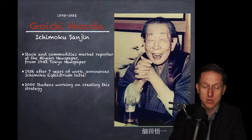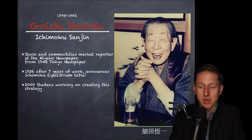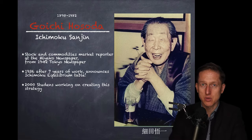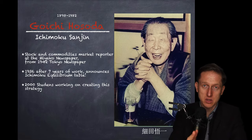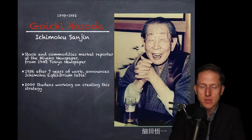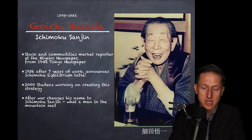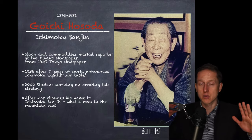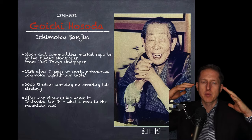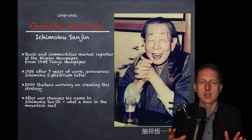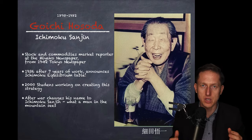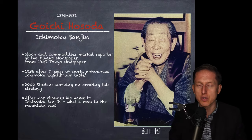Two thousand students were working on creating this strategy. We need to remember that back then there were no computers. We're talking about 1936, before the Second World War. So 2000 students helped him with the creation of charts. The strategy was secret, but you need to make certain calculations to plot all five lines. He probably divided the students into groups so they didn't understand how everything was created together.